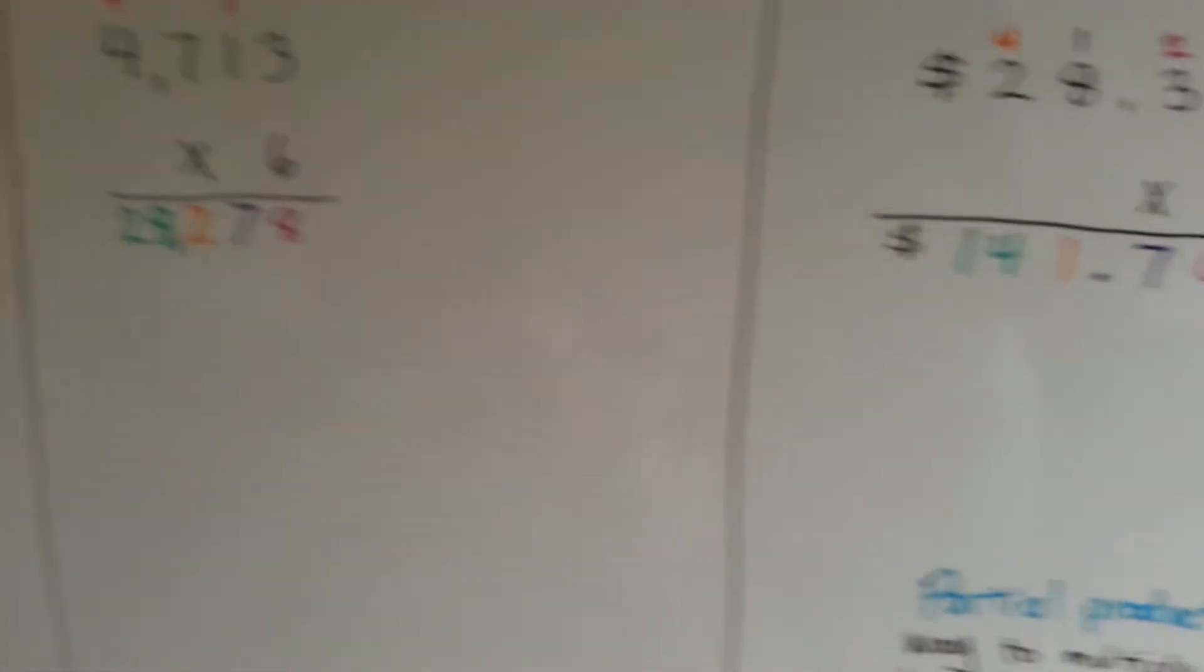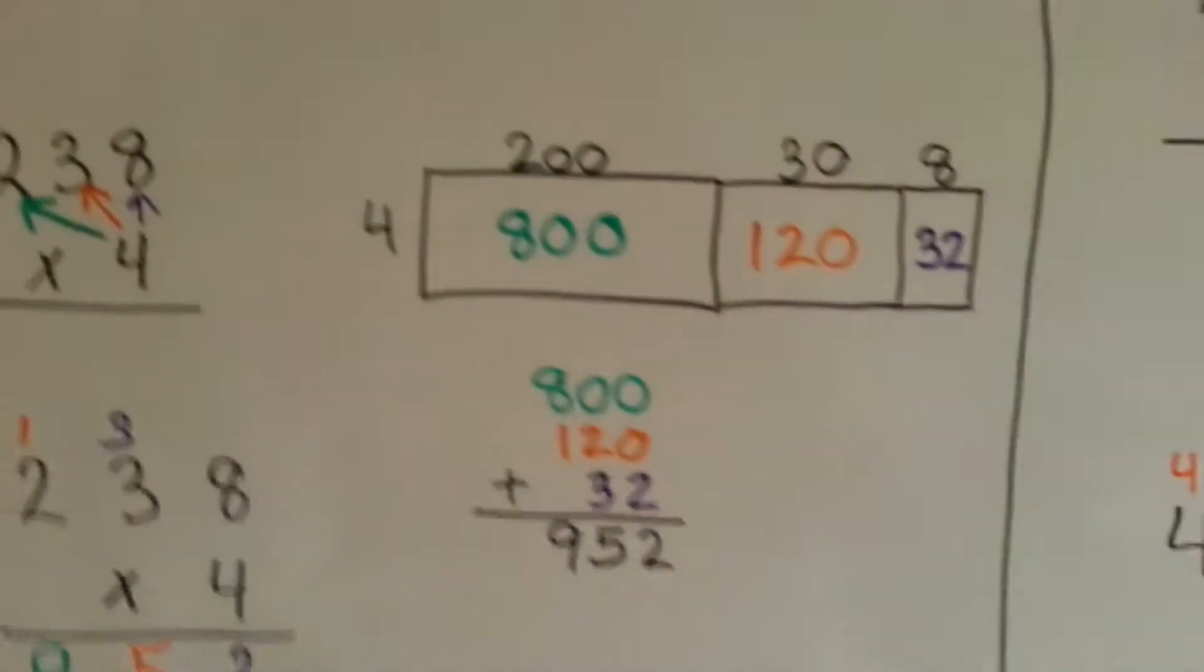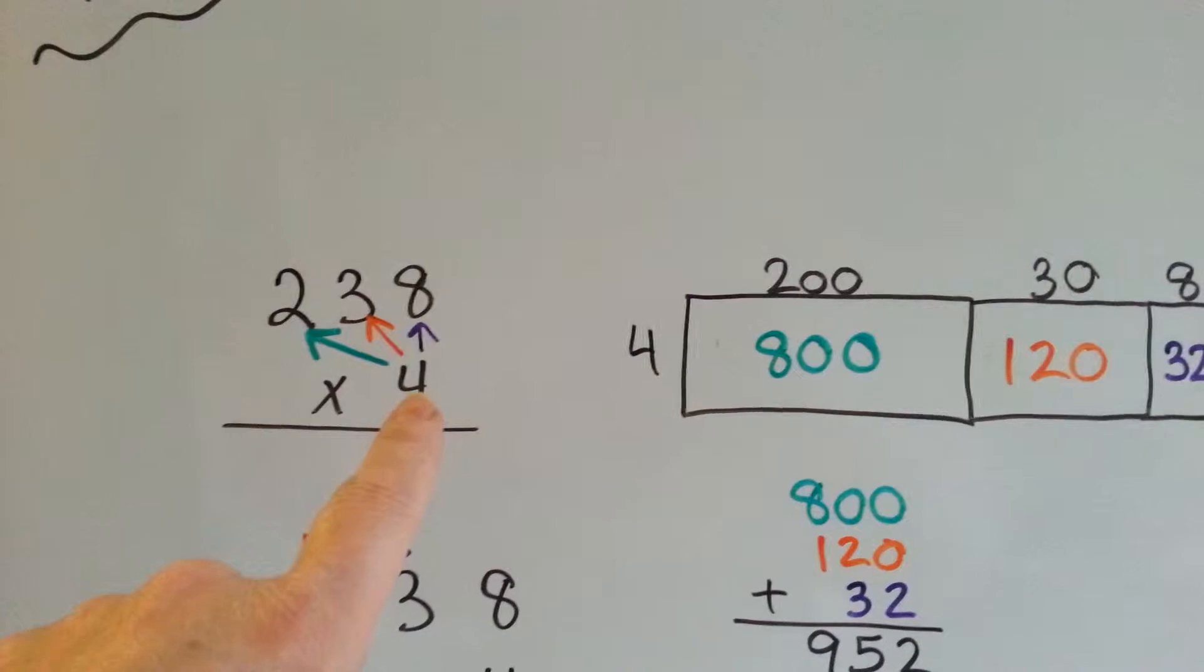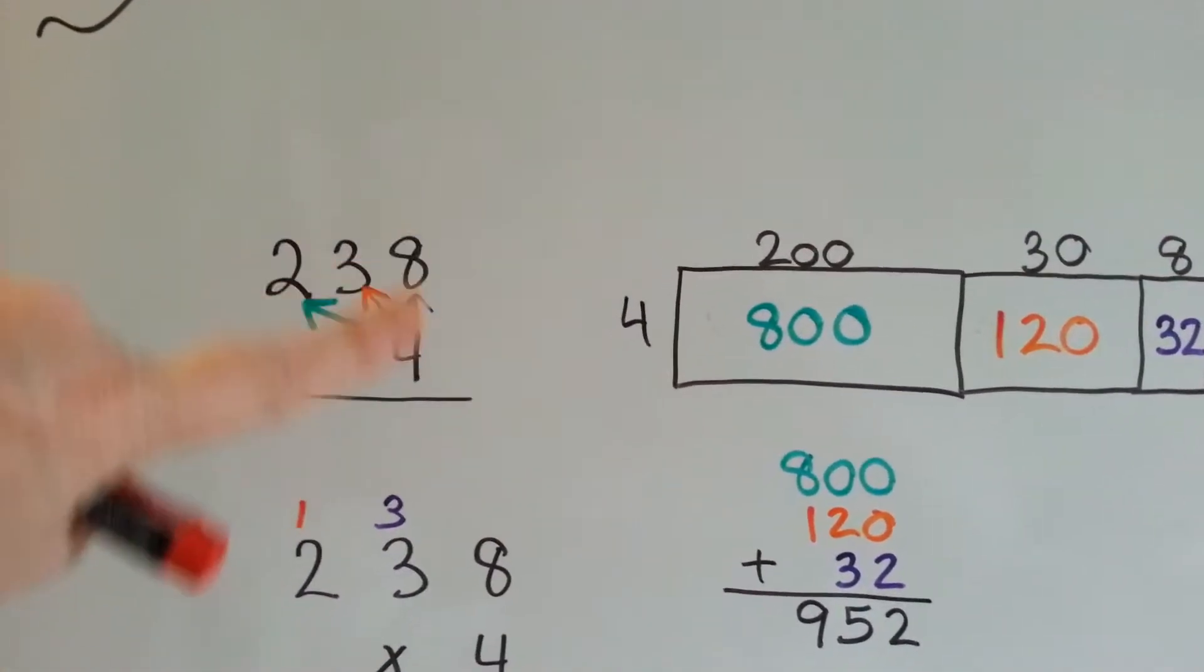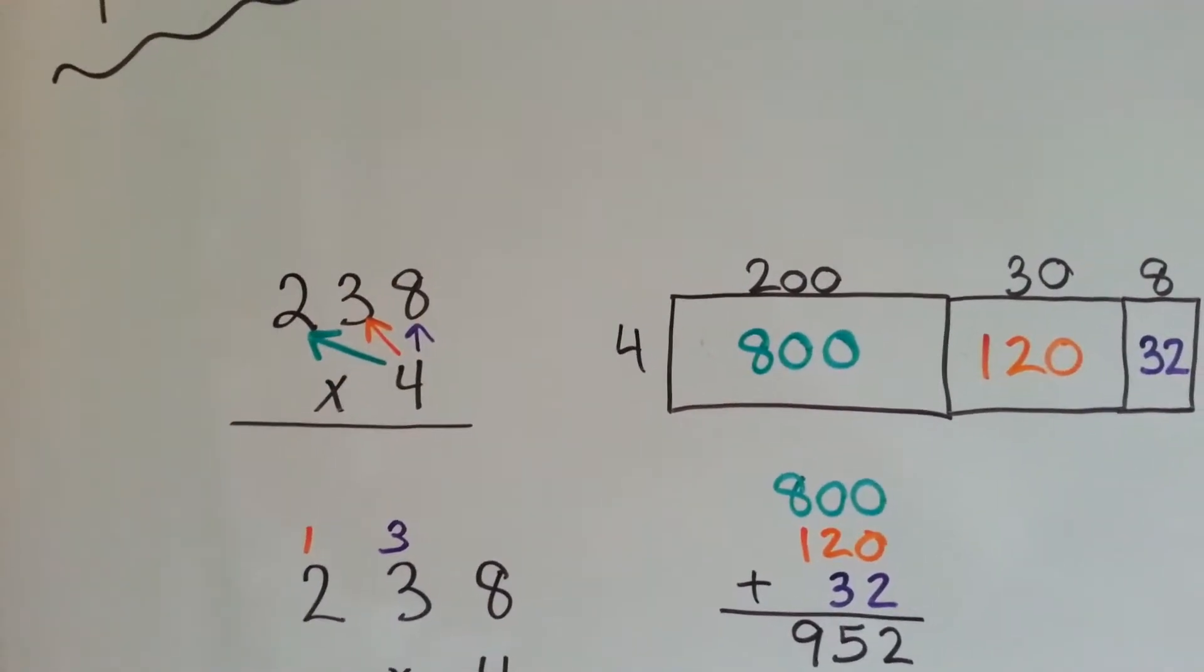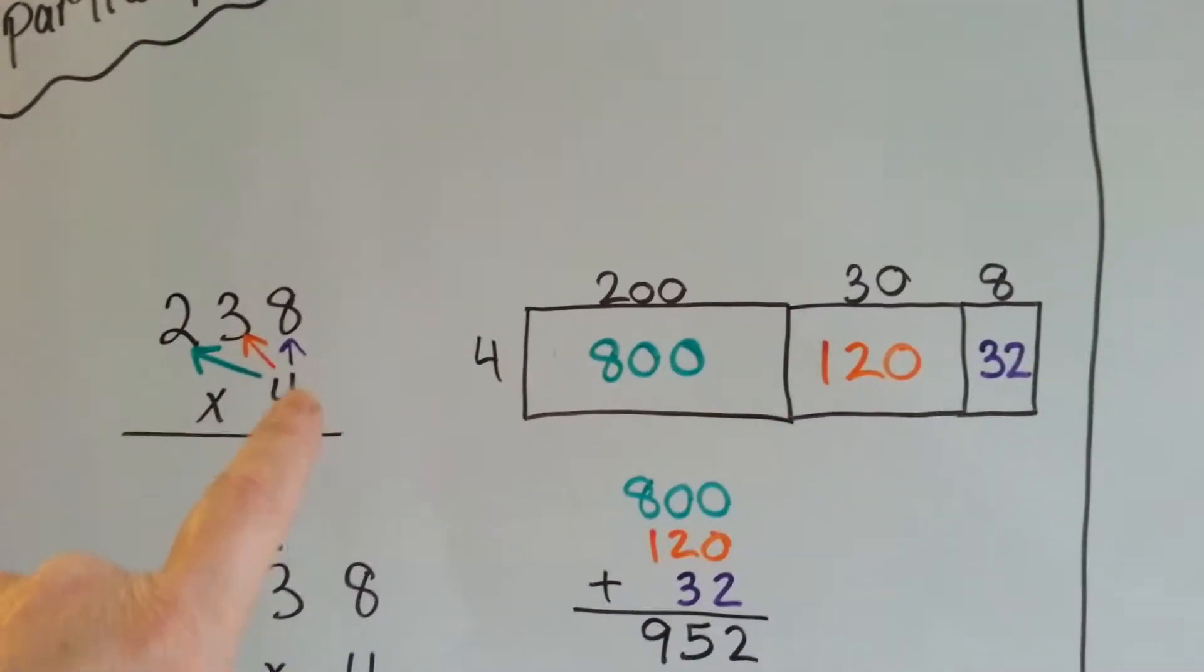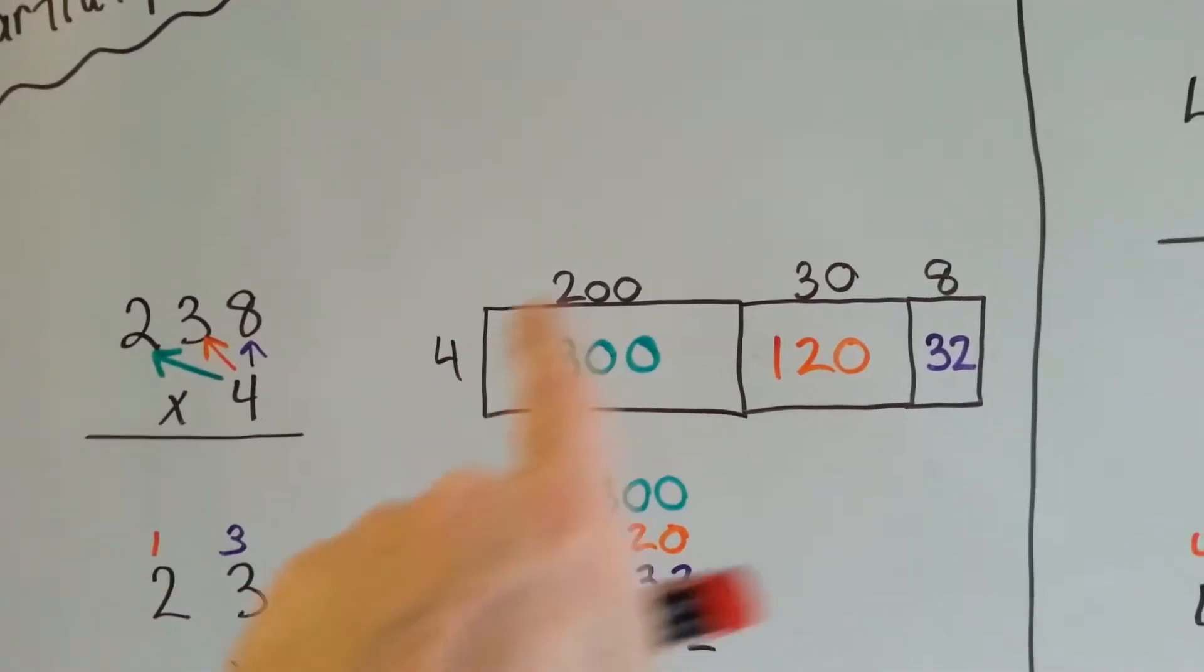So let's see what we've got here. Let's come over here. We've got 238 times 4. And this is how you would write it stacked, so that it would be easier to multiply. So what we've got is 4 times 8. Here's 4 times 8.